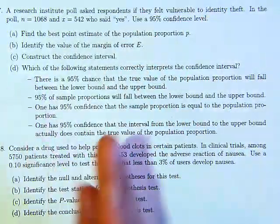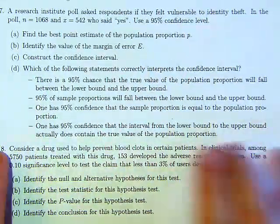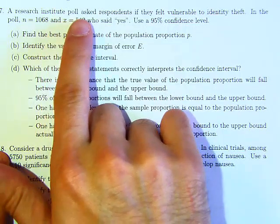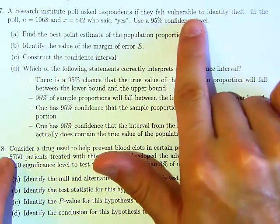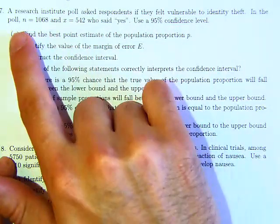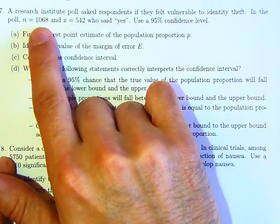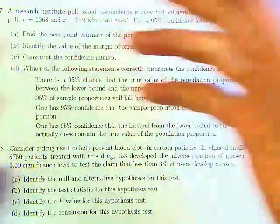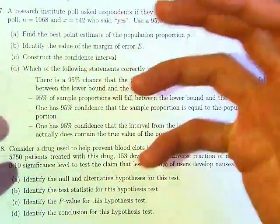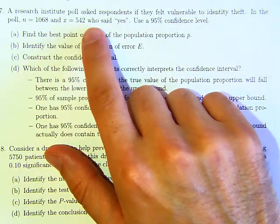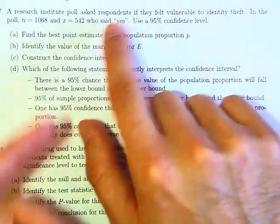All right, welcome back. Question number seven: A research institute poll asked respondents if they felt vulnerable to identity theft. In the poll, n equals 1068, representing the sample or all the people within the poll. 542, this x value, represents the people who said yes, and we need to use a 95% confidence interval.